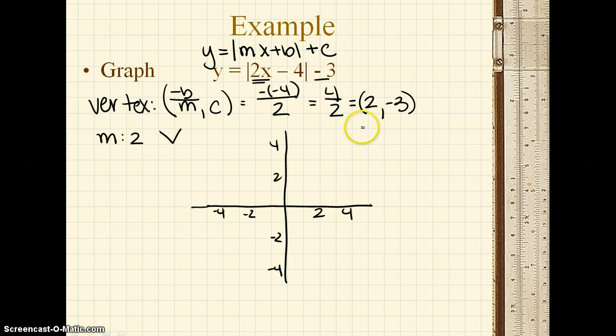Okay, so start by graphing the vertex, so 2, negative 3. Once you've done that, again, the slope is 2.